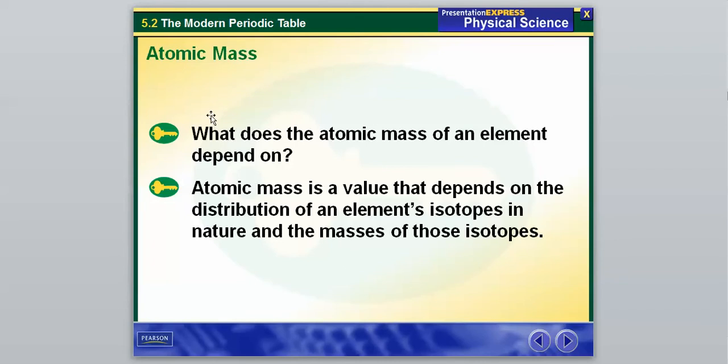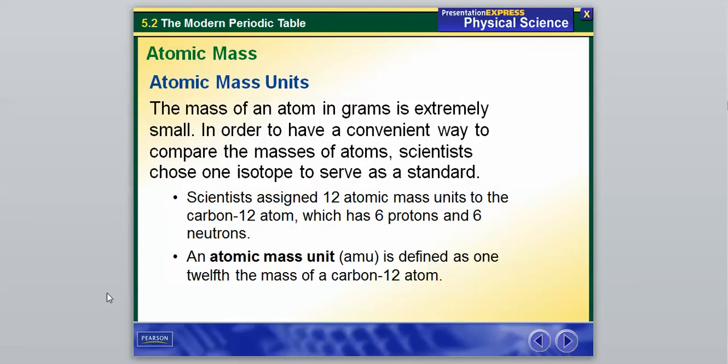So the first thing is we're going to talk about something about the atomic mass of an element. And atomic mass is a value that depends on the distribution of an element's isotopes in nature and the masses of those isotopes. So we will take a look at what that actually means here in a second. So the mass of an atom in grams is extremely small, so it's going to be very hard to measure.